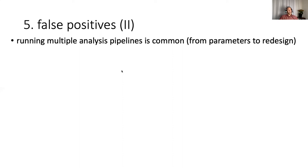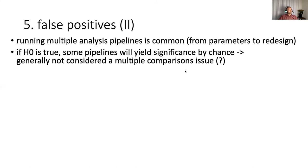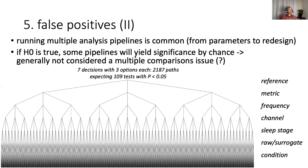And this is something that is quite common, both from my own experience and from what I think I see other people doing. It's quite common to change parameters slightly or in more methodical ways where you step through a whole number of parameter settings, all the way to a complete redesign of your pipeline using different metrics. But here too, if your null hypothesis is true and there aren't any effects in the population, some pipelines will yield significance by chance.